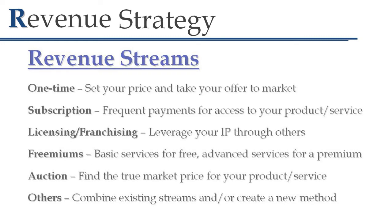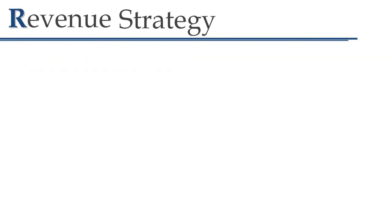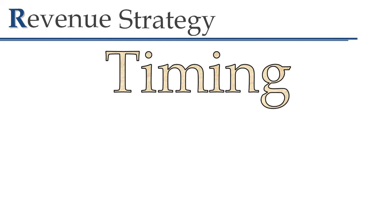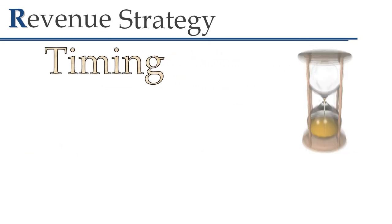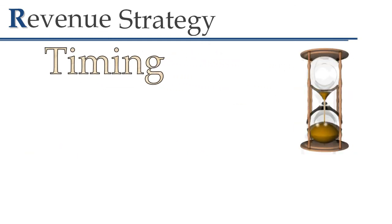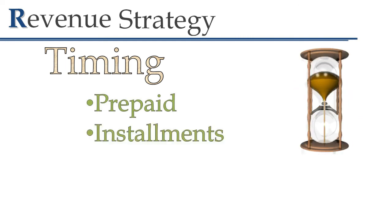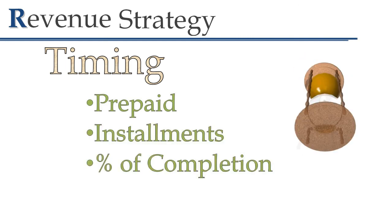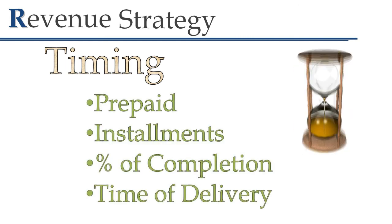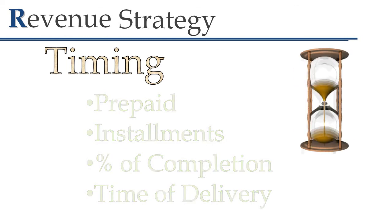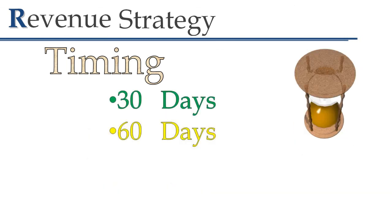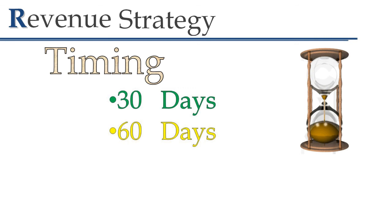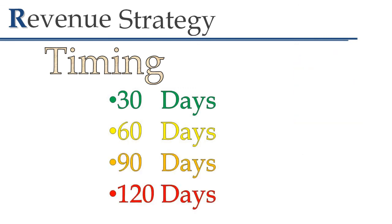No matter what revenue stream you decide on, the two biggest elements you must consider in your projections are timing and allowance for bad debt. When will customers pay for your product or service? Prepaid? Installments? Percentage of completion? Time of delivery? You will need to estimate how many customers will pay within 30, 60, 90, and 120 days.